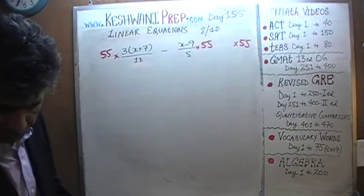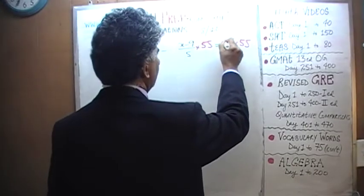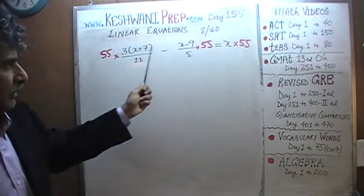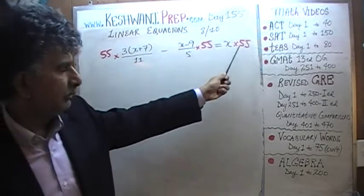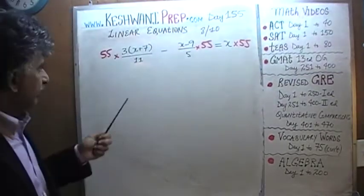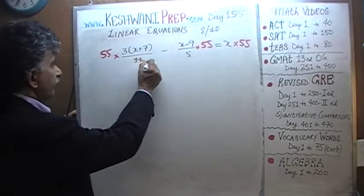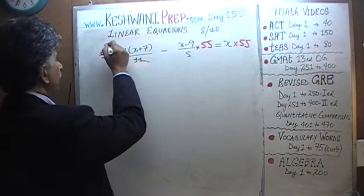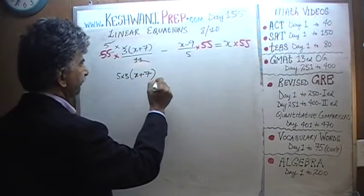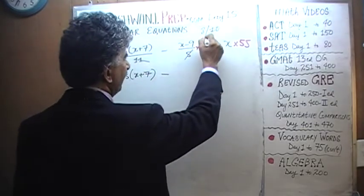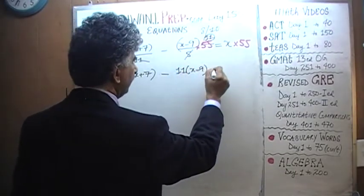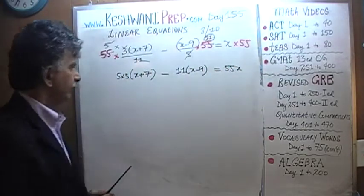We're going to multiply this entire equation by 55, every single thing. Since we multiplied both terms on the left-hand side of the equation by 55, we have to multiply the right side of the equation by 55 as well in order to make sure that the equation remains balanced. Now we can do our division and get rid of the 11. Divide top and bottom by 11, 55 becomes 5 and we end up with 5 times 3 times x plus 7. Minus, divide top and bottom by 5, 55 becomes 11 and we'll end up with 11 times x minus 9 equals 55x.